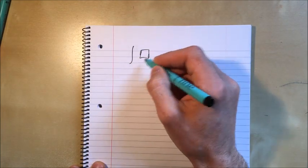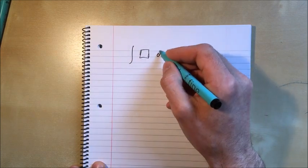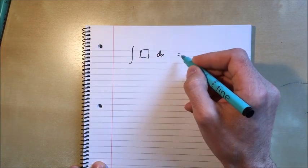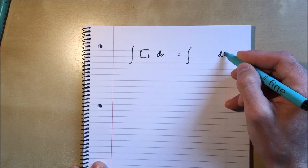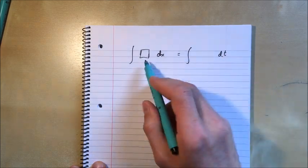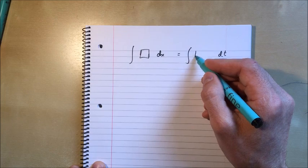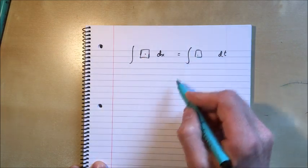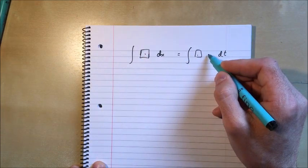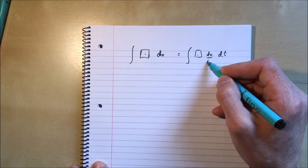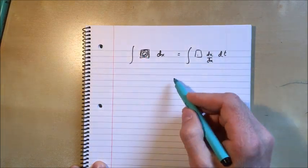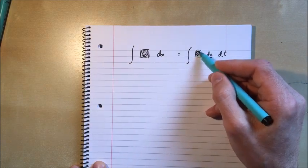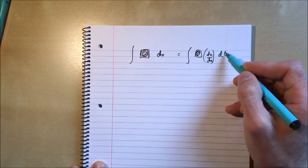And that is this: if you're integrating something with respect to x, and you want to integrate it with respect to something else, let's say t, then how do I do that? The answer is the same thing, but you have to include a dx/dt. So if you want to integrate this thing with respect to x, then integrate that thing times by dx/dt with respect to t. These two integrals are going to be the same thing.